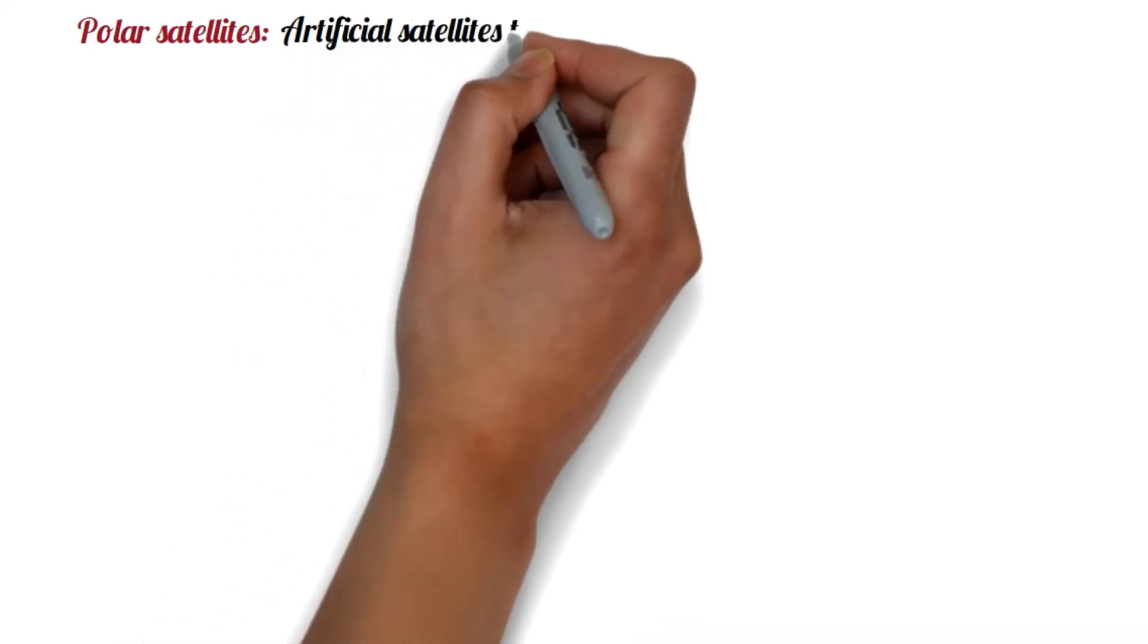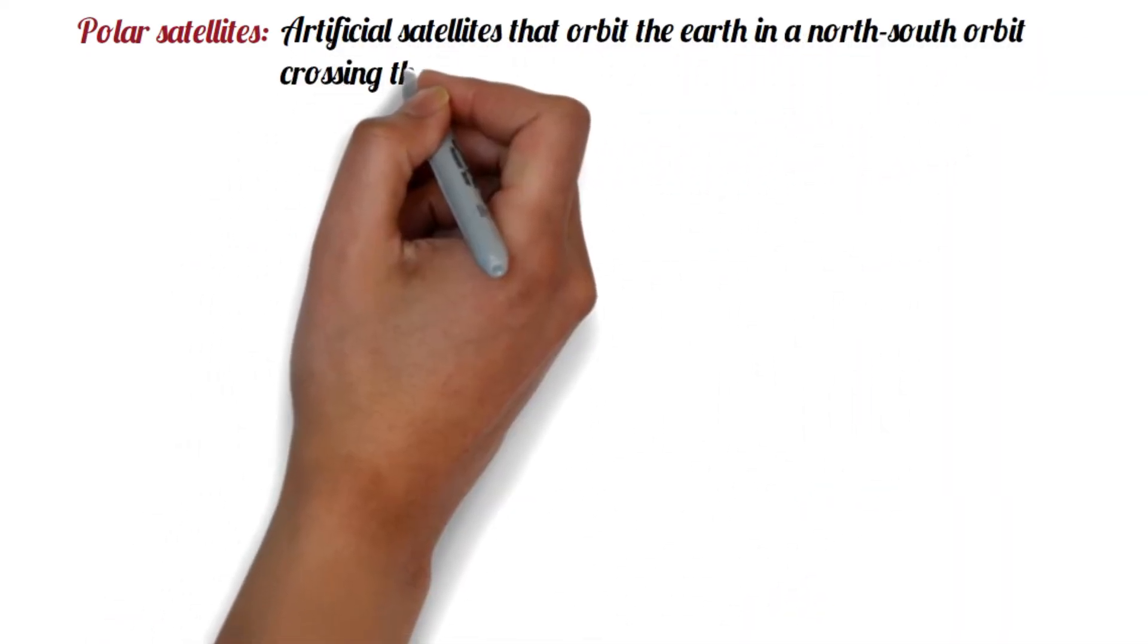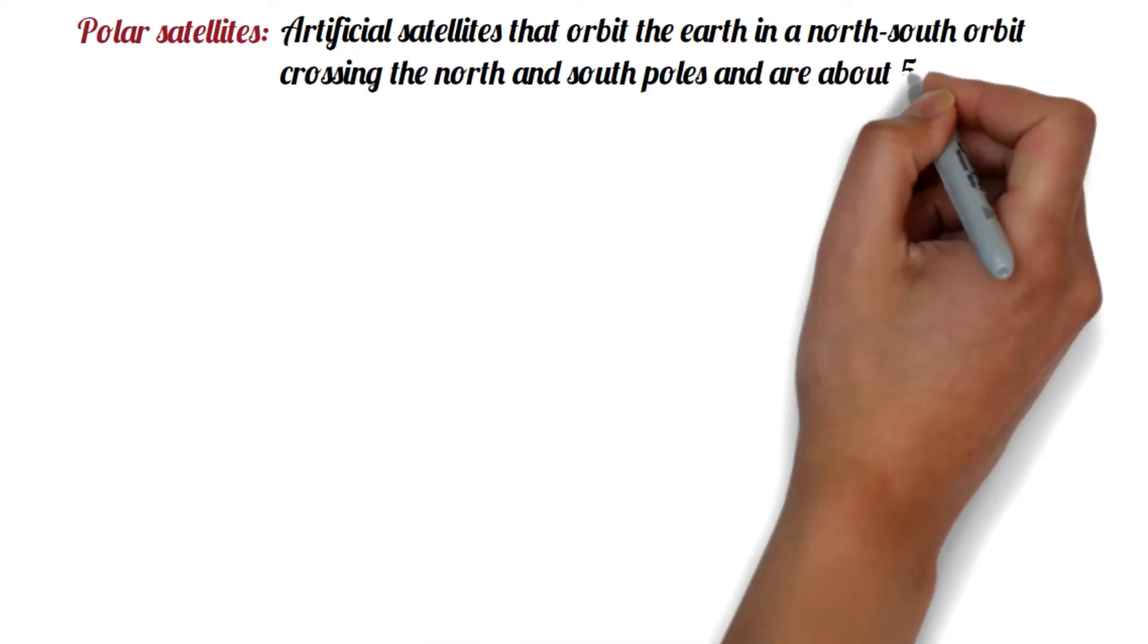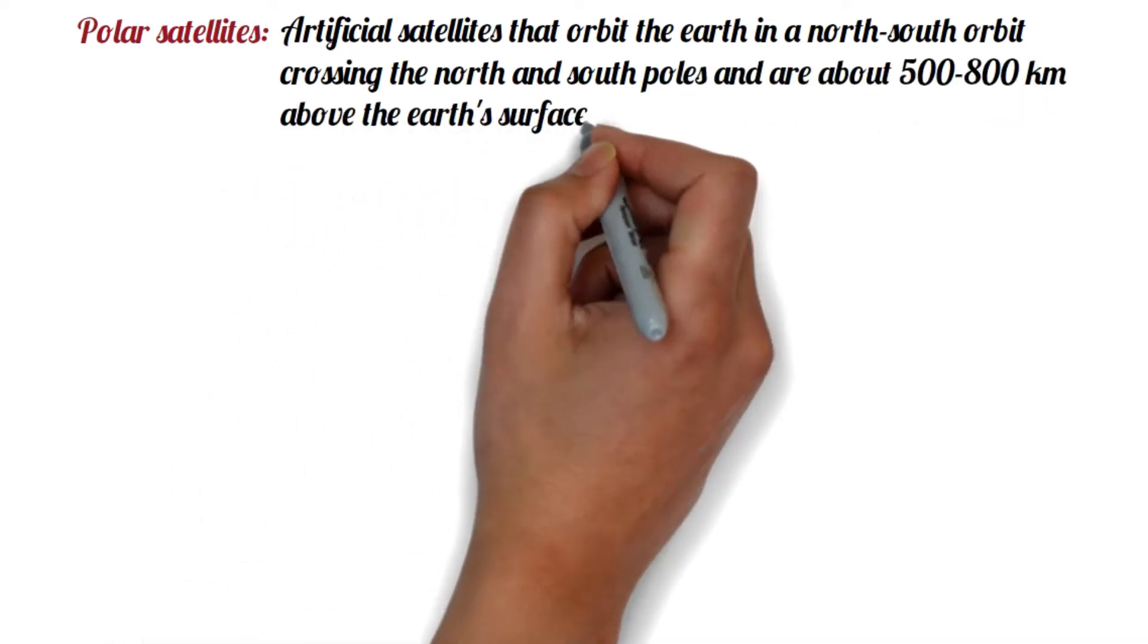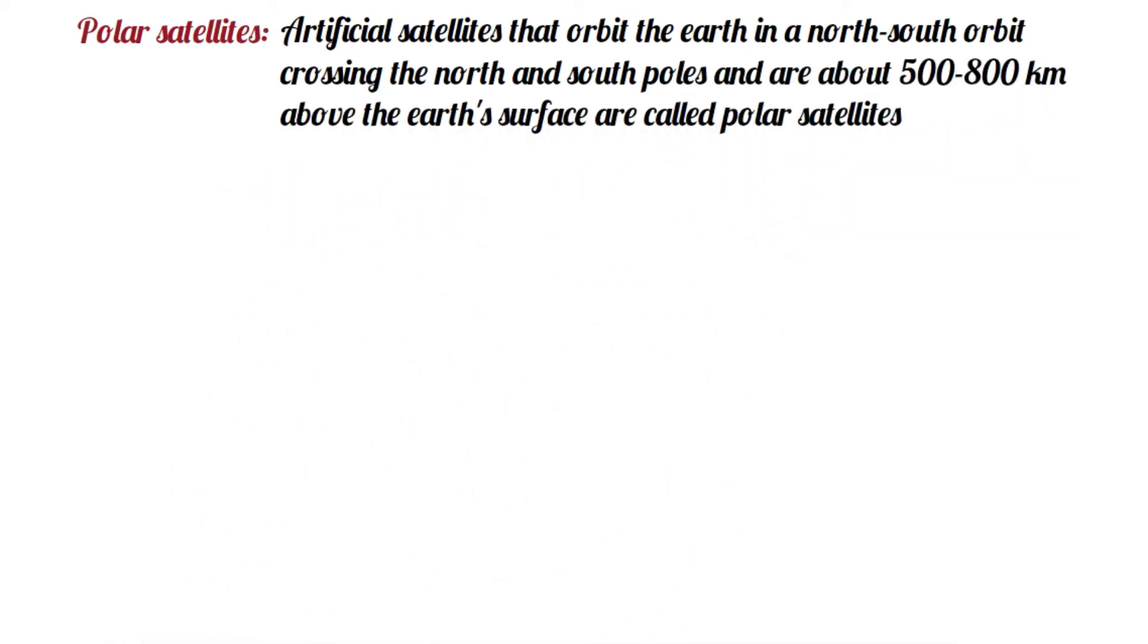Polar Satellite. Artificial satellites that orbit the Earth in a north-south orbit, crossing the north and south poles, and are about 500 to 800 kilometers above Earth's surface, are called polar satellites.